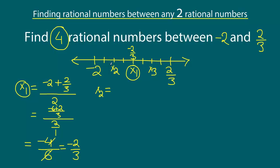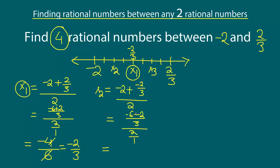The second rational number is the midpoint or average of minus two and minus two over three. So we write minus two plus minus two over three, the entire thing divided by two. In the numerator, the LCM is three, giving minus six minus two, which is minus eight. The denominator is two over one, so we have minus eight times one over three times two. We can cancel, giving us minus four over three. So x2 is minus four over three.